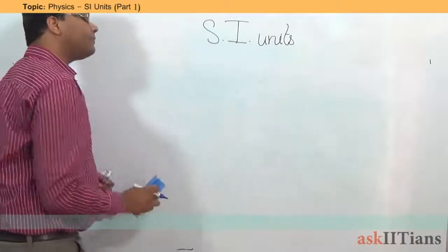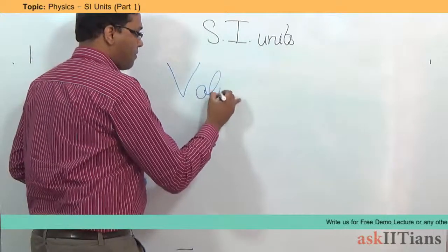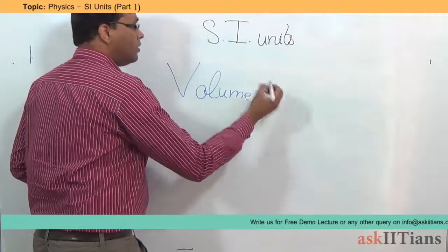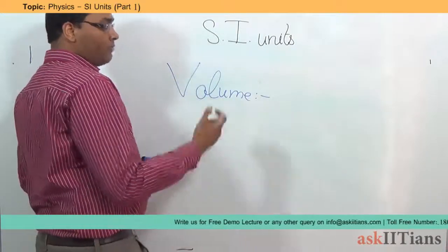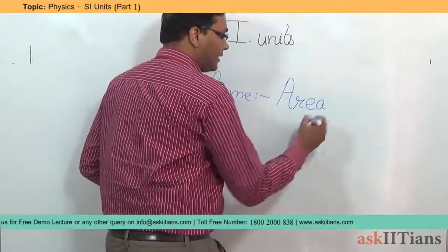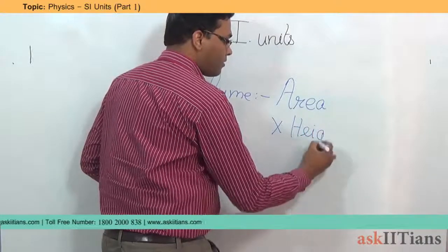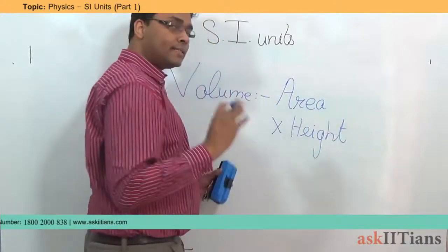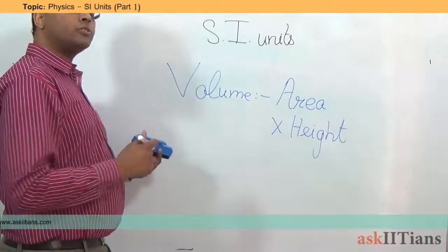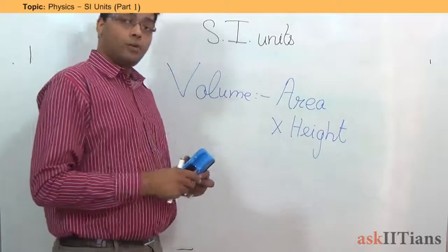Then, if I have volume. So, how do we define volume? Volume will be equal to the area into the height. Then, we are talking about three dimensional picture. So, it is going to be equal to the area into the height. So this is how we compute the volume.